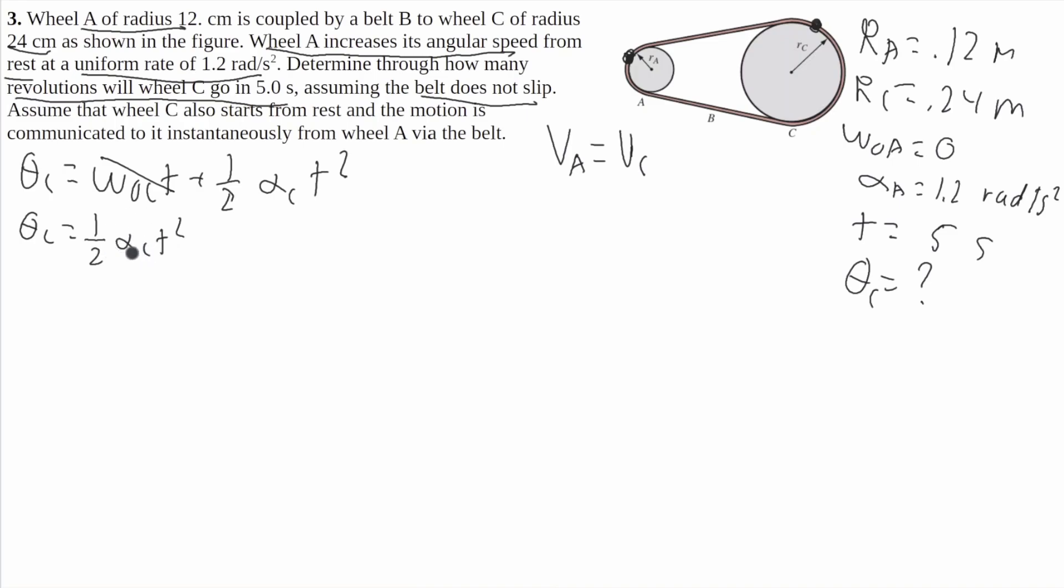Now to find alpha C, I'm going to write another equation. It'll be V C equals V naught C plus A C T. Now V naught C is going to be 0, so it simplifies to V C equals A C T. Now if you remember, we said that V C is going to equal V A, so I'm going to switch this V C for V A, equals A C T.